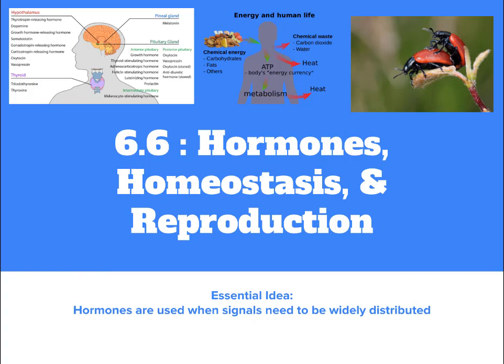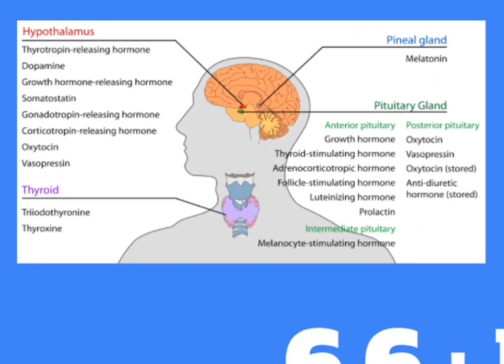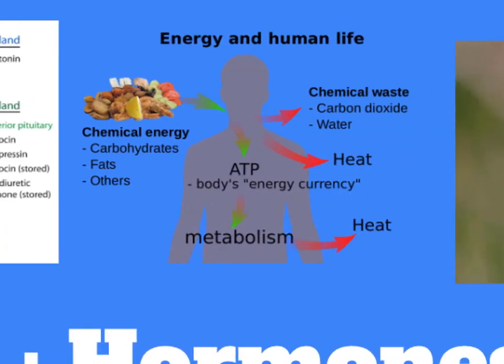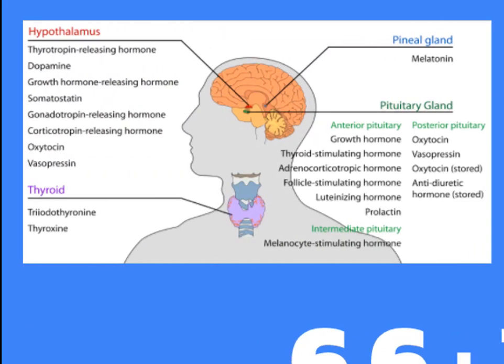Our hormones influence and have a role in reproduction, metabolism and energy balances, growth and development, body defenses, and general homeostasis — things like water, nutrient, and electrolyte balance of the blood. So really, they are heavy hitters. They're amazing communicators and they use our blood systems as their delivery system.